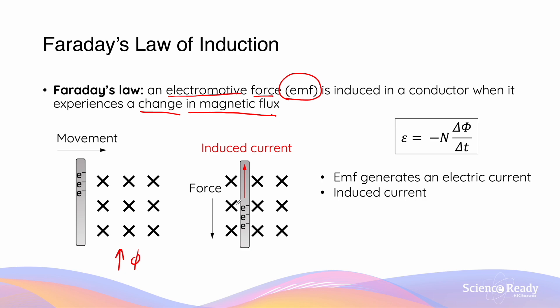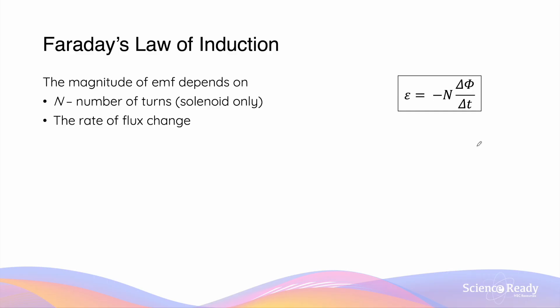Mathematically, Faraday's law is expressed as: epsilon equals minus N times delta phi over delta t, where epsilon is the EMF, N is the number of turns of the conductor, and delta phi over delta t is the rate of change of flux. This equation tells us that the magnitude of EMF depends on the number of turns of the coil — typically applicable when looking at solenoids rather than straight conductors — and more importantly, on the rate of flux change. The faster the flux is changing, the greater the magnitude of the EMF will be. Consequently, a greater EMF will likely produce a greater induced current in the conductor.